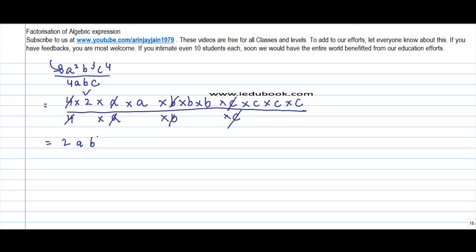b has got 2 power remaining, so you write this as b to the power 2, and c: 1, 2, 3, c³.